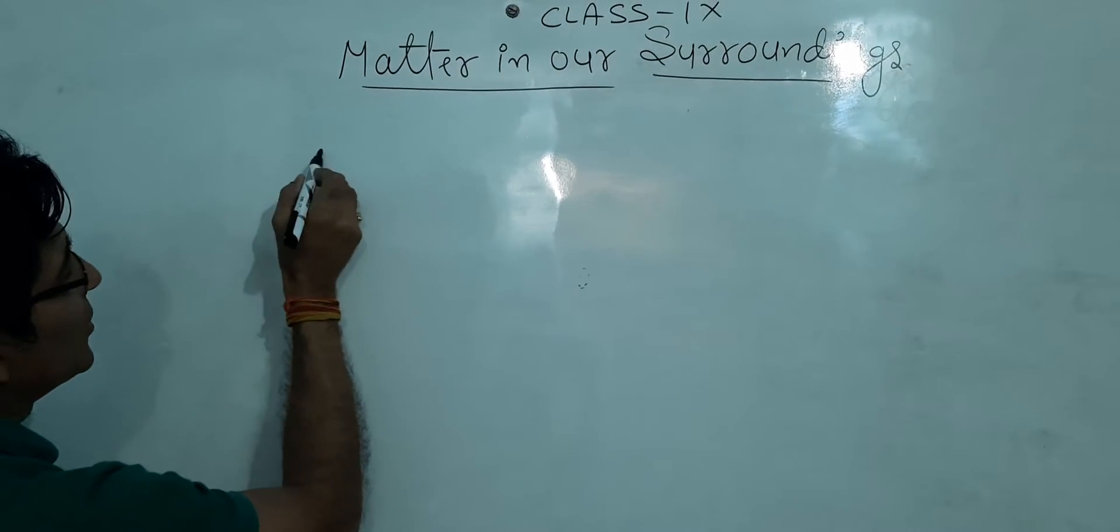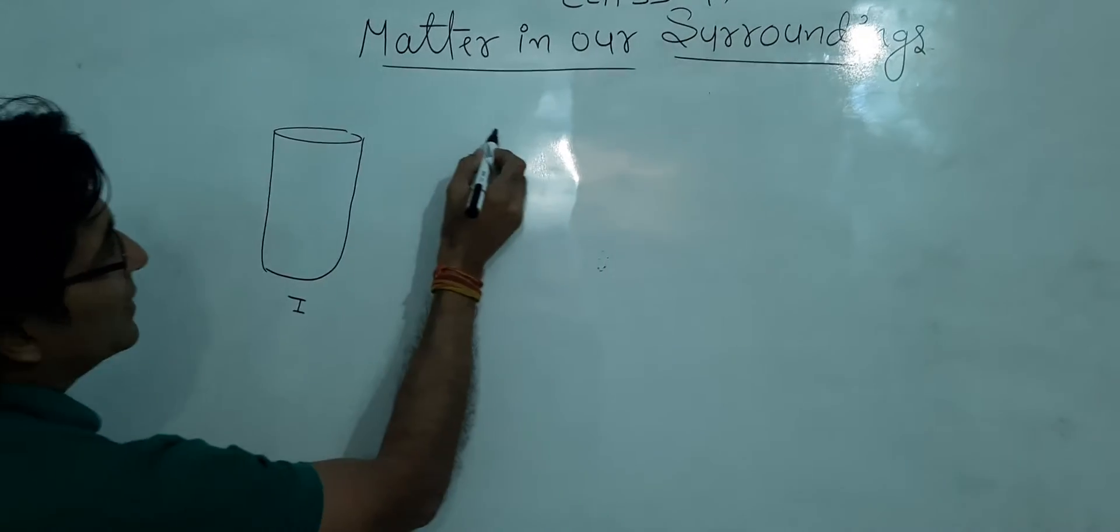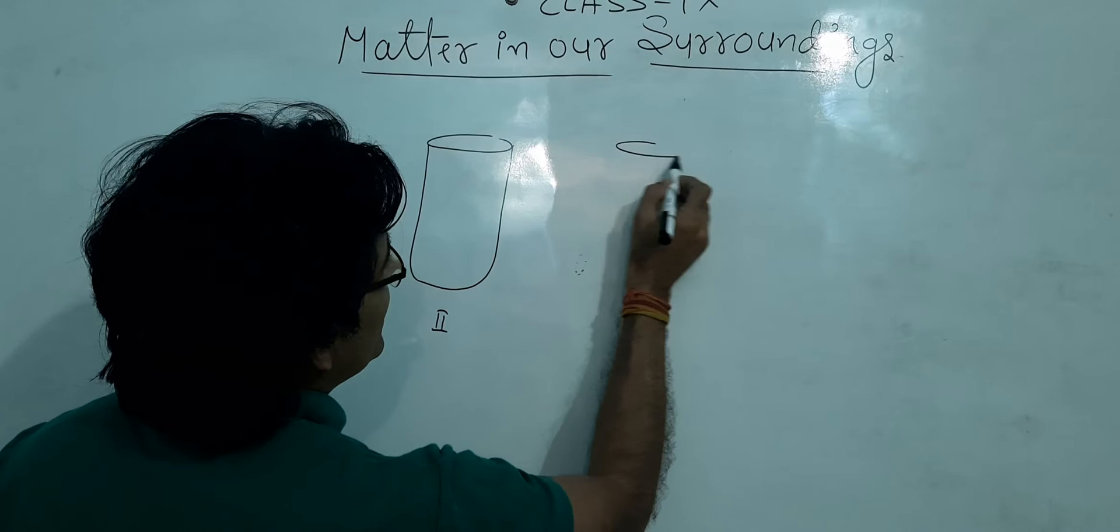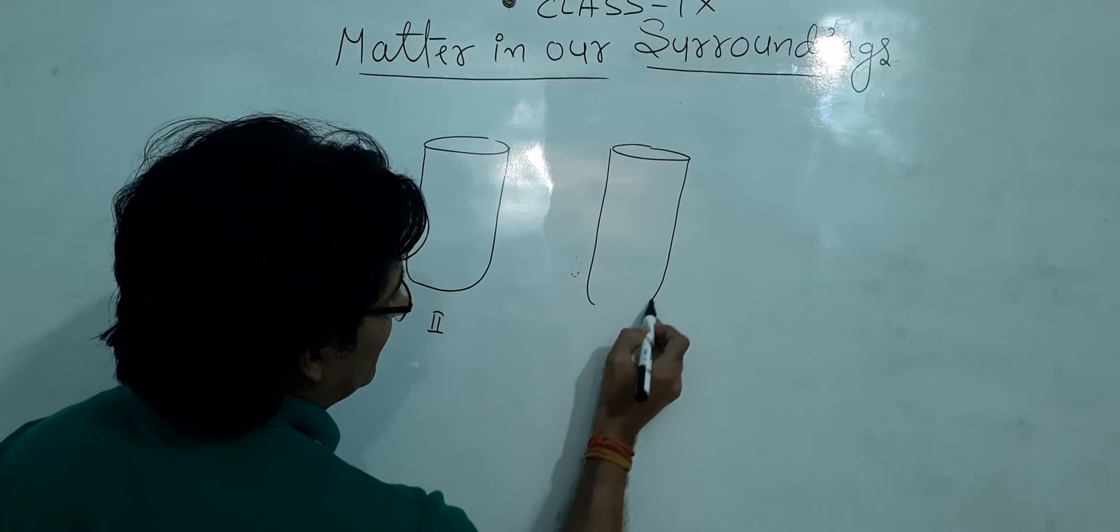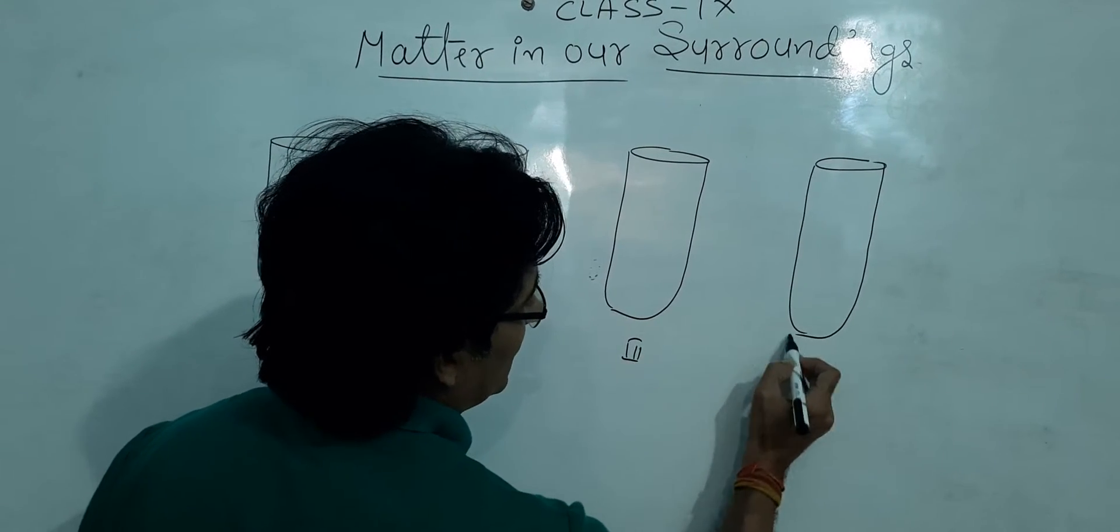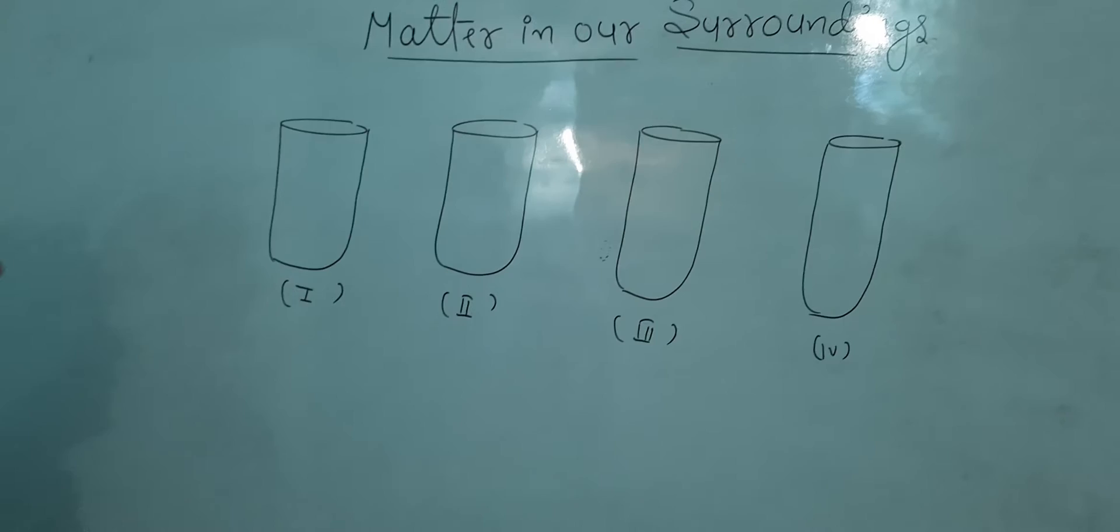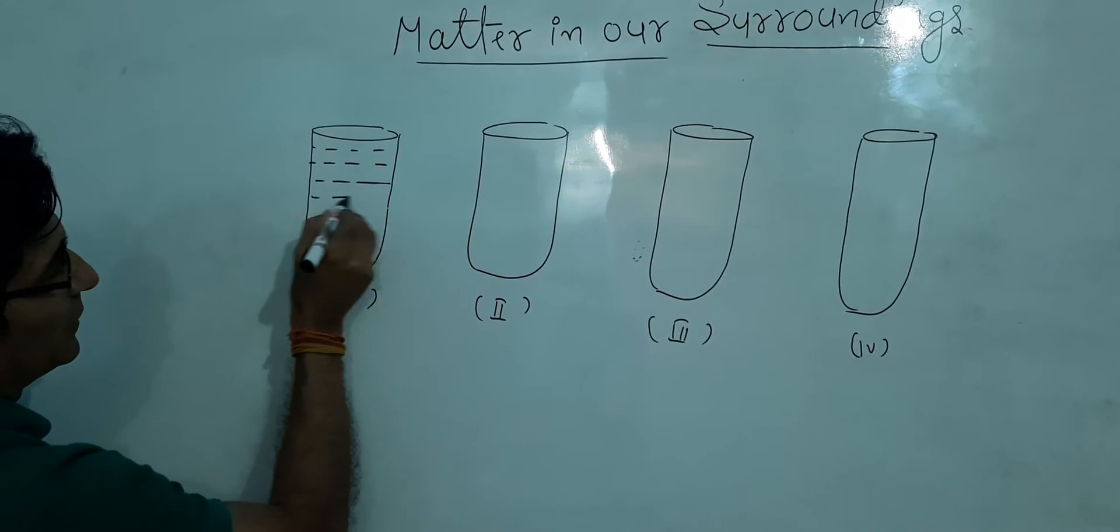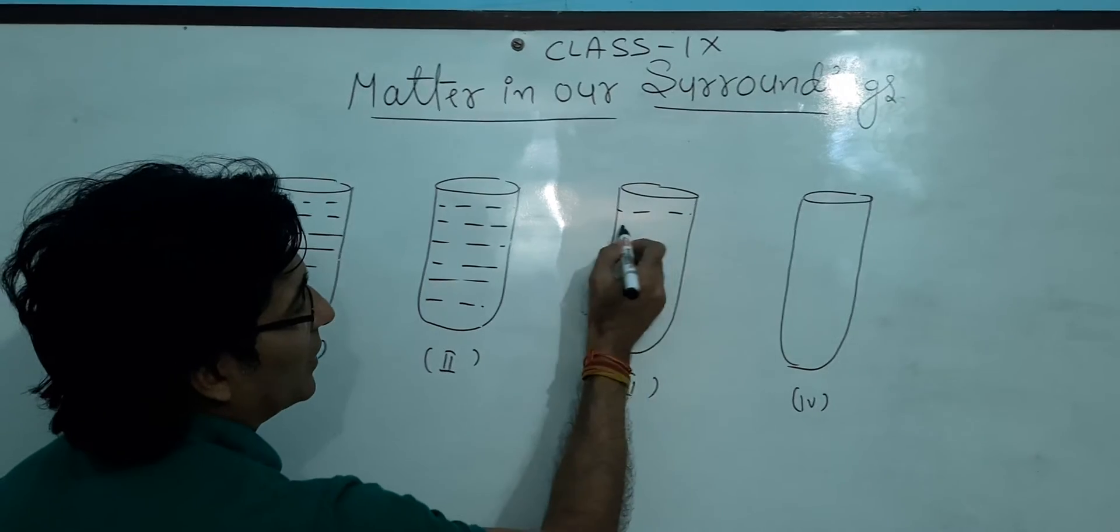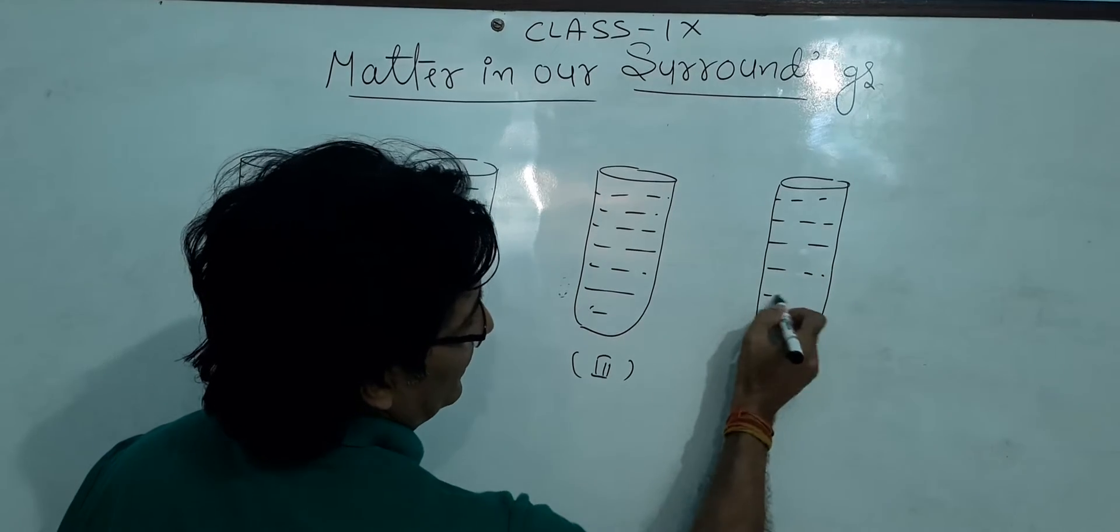Let us take four test tubes. This is test tube number one, test tube number two, this is test tube number third, and this is test tube number four. You can take many more test tubes also. Let us fill these test tubes with water. All four test tubes are now filled with water molecules.